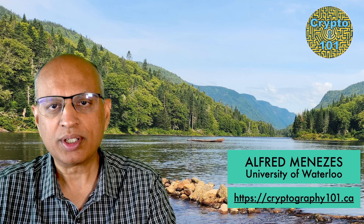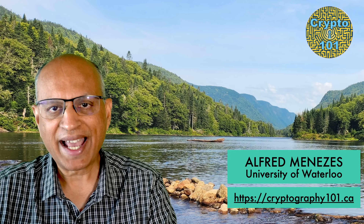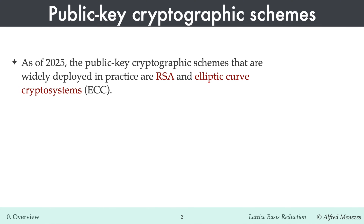Today's video is a brief introduction to my short course on Lattice Basis Reduction. As of the year 2025, the two public key schemes most commonly used in practice are RSA and Elliptic Curve Cryptography, or ECC. The security of all RSA cryptosystems relies on the difficulty of factoring large integers, for which the fastest known method is the number field sieve. By contrast, ECC security is based on the difficulty of finding elliptic curve discrete logarithms, for which the fastest algorithm known is Pollard's Rho algorithm.